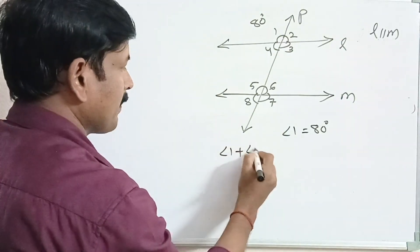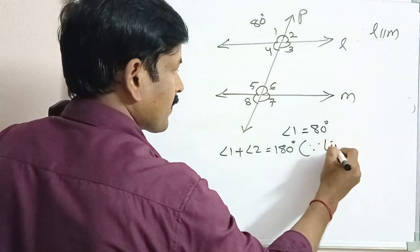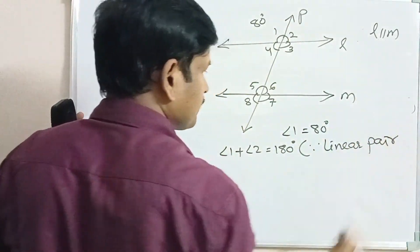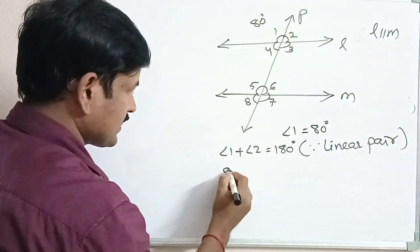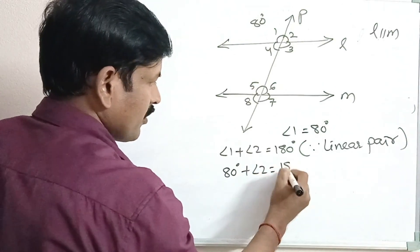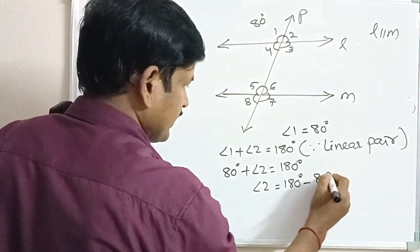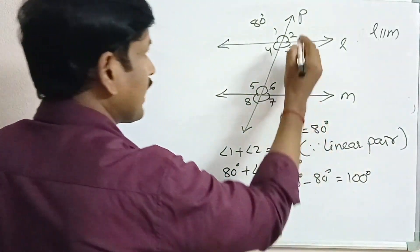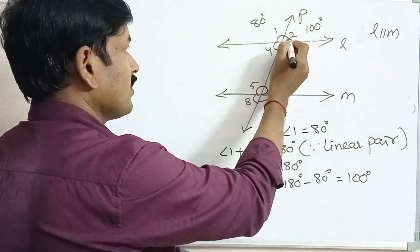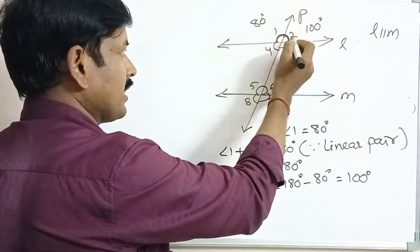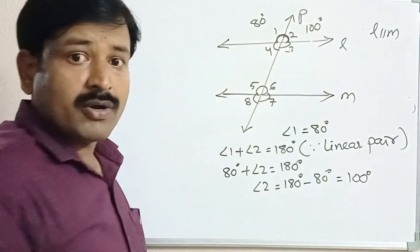As we know, angle 1 plus angle 2 = 180 degrees since they form a linear pair. Substituting angle 1 = 80 degrees, angle 2 = 180 minus 80 = 100 degrees. So angle 2 = 100 degrees. The sum of angle 1 and angle 2 is 180 degrees: 80 plus 100 equals 180 degrees.